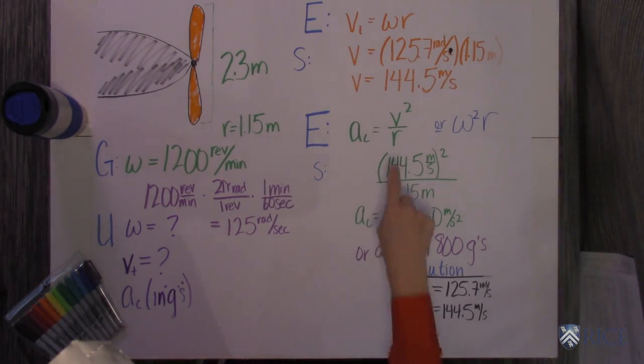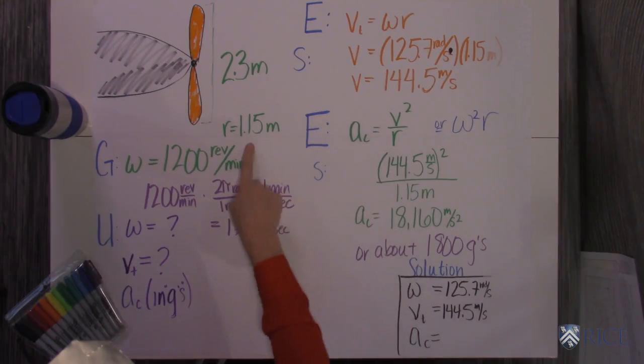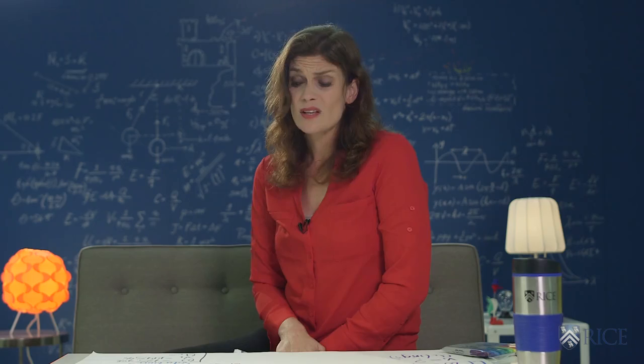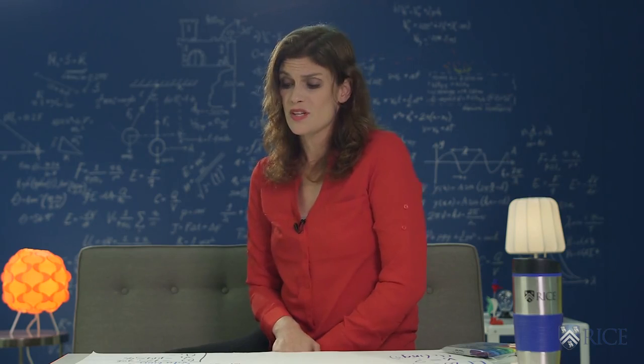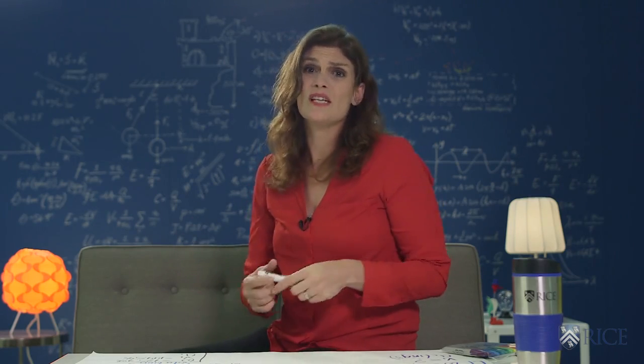I just hit squared and divided by our radius which is 1.15 meters and then you get that the centripetal acceleration is crazy huge. It's 18,160 meters per second squared which is about 1,800 g's.